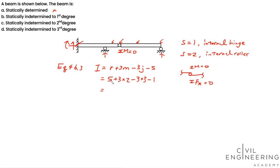So 5 plus 6 minus 9 minus 1, so this is a first-degree indeterminate structure, so your answer will be B.